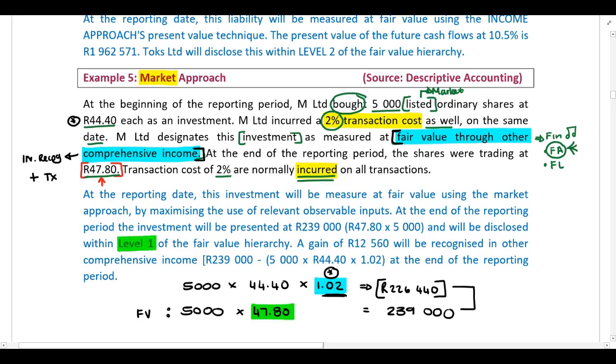Why level 1? Because this is a market approach and we are able to receive a quoted price in the market.